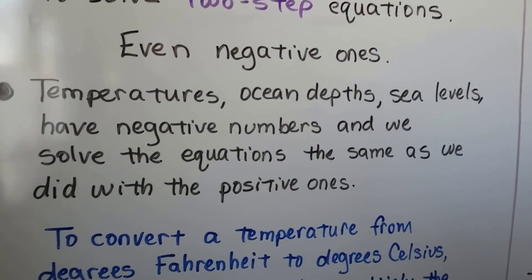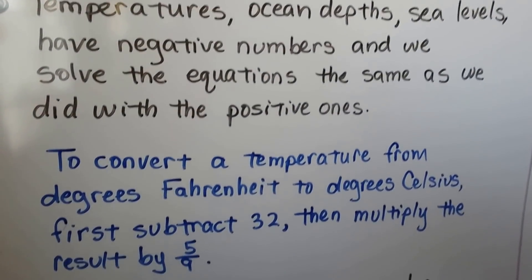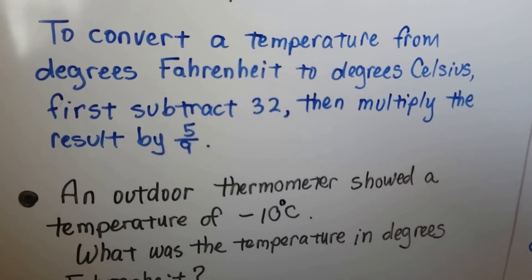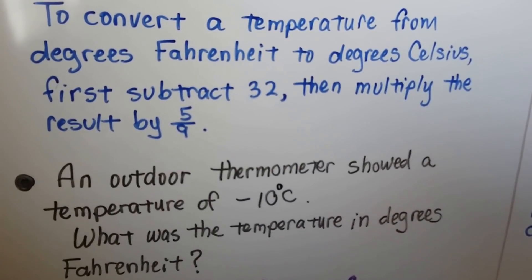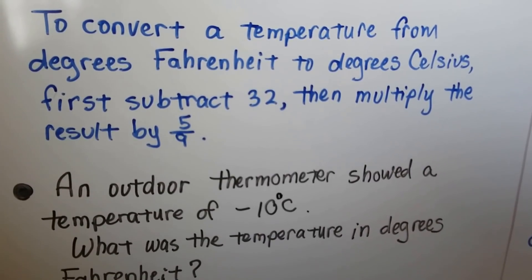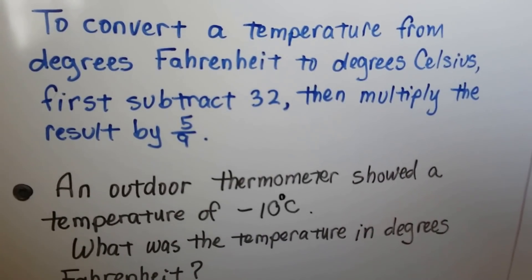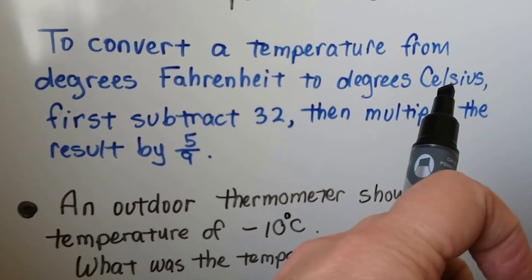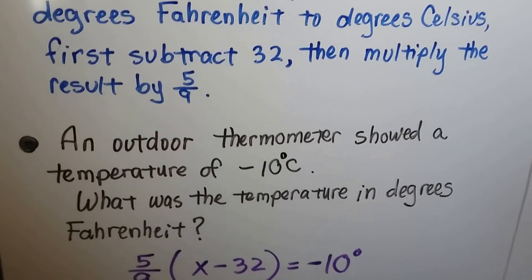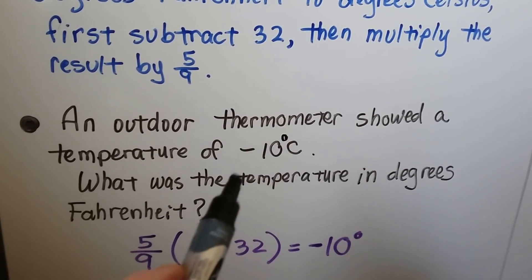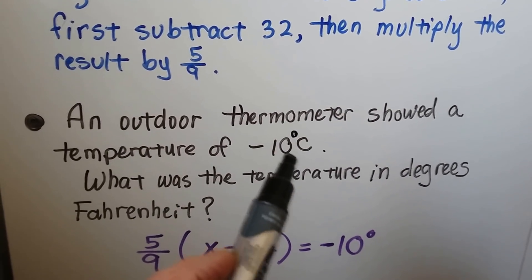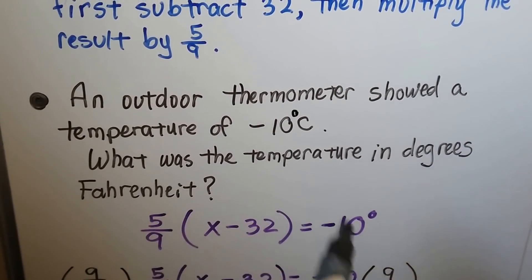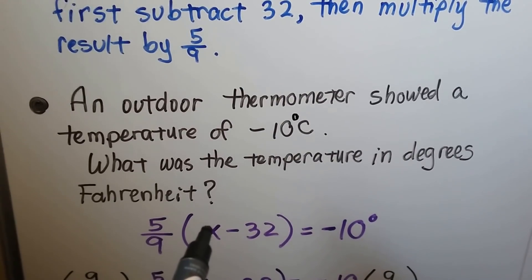Temperatures, ocean depths, sea levels have negative numbers, and we solve the equations the same as we did with the positive ones. To convert a temperature from degrees Fahrenheit to degrees Celsius, we first subtract 32, then multiply the result by 5 ninths. An outdoor thermometer showed a temperature of negative 10 degrees Celsius. This is the formula to find Celsius, but it's already giving us Celsius. So what was the original Fahrenheit degree?